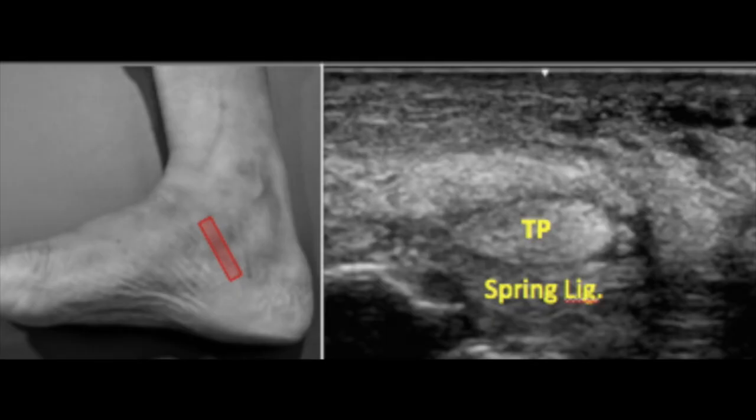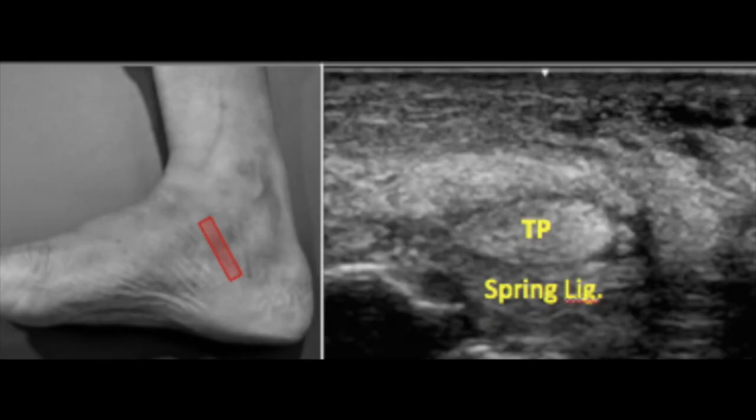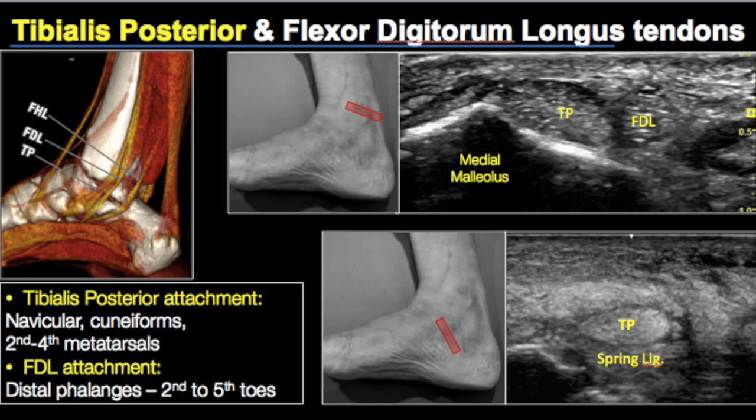On the short axis in the inframalleolar segment, just below the tibialis posterior, we see a broad cord-like structure — this is the spring ligament. When evaluating tibialis posterior dysfunction, it's important to assess the spring ligament as well, since after failure of the tibialis posterior tendon, it's the spring ligament which gives way and contributes to the loss of the medial arch of the foot.